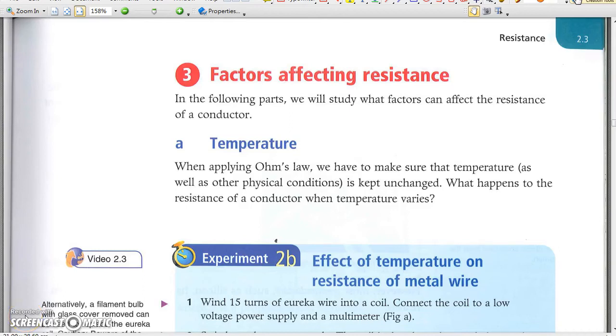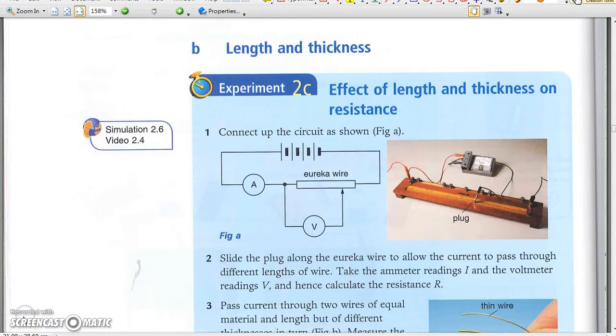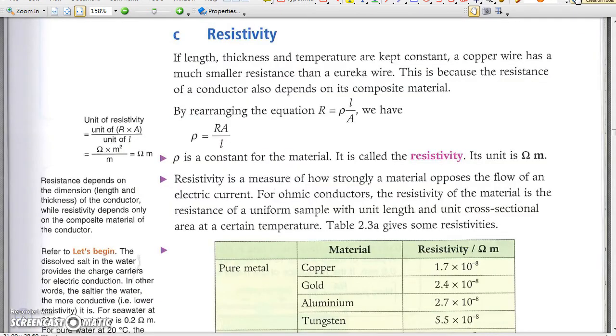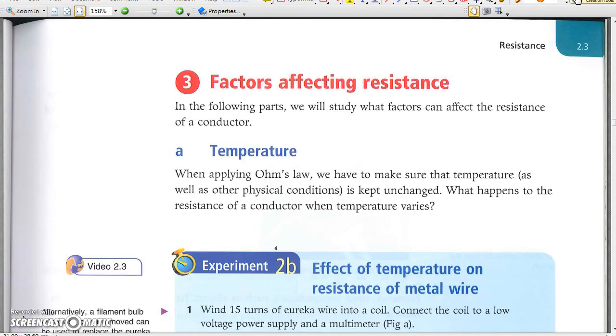3. Factors affecting resistance. The physical dimensions such as length and thickness, and the resistivity of the material, may affect the resistance of a resistor.